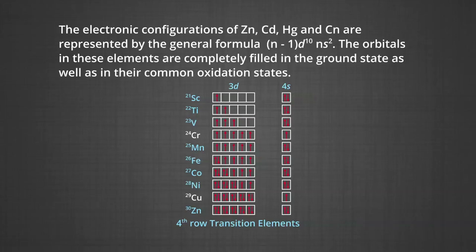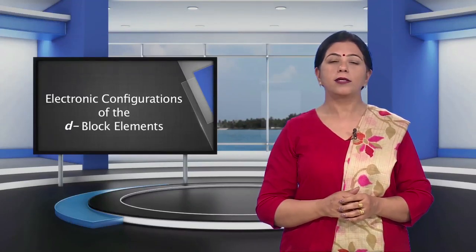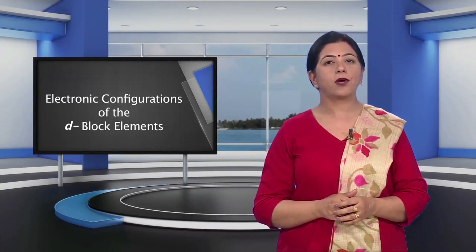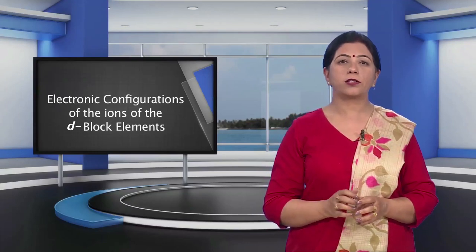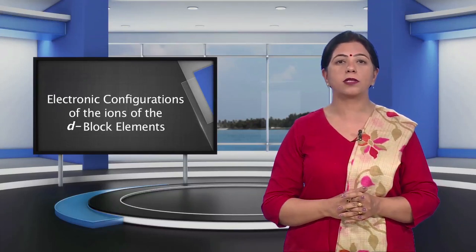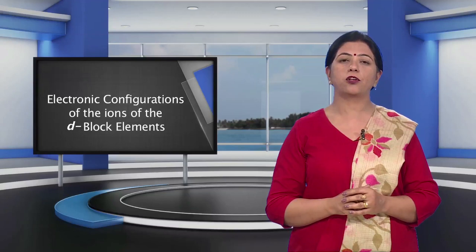The D orbitals in zinc, cadmium, mercury and copernicium are completely filled in the ground state as well as in their common oxidation states. Therefore, these are not regarded as transition elements. This is a frequently asked question in the exam: why are zinc, cadmium and mercury not regarded as transition metals? For writing the electronic configurations of the ions of the D block elements, you must understand that this topic is commonly asked in exams and is also the basis of the next unit on coordination compounds.